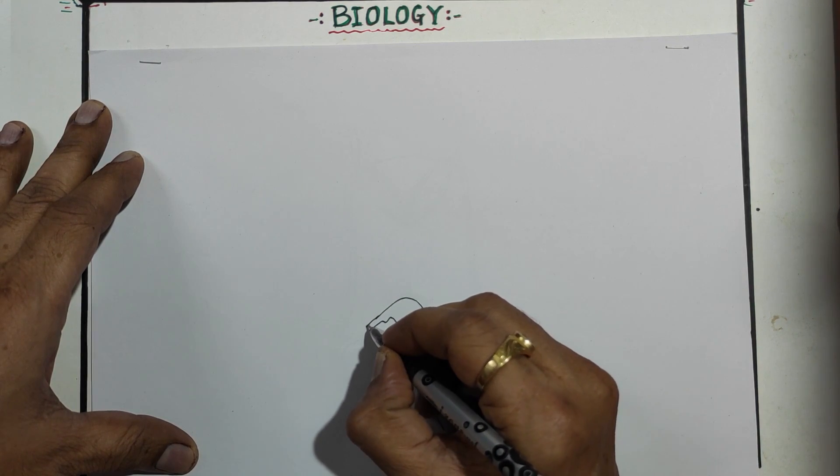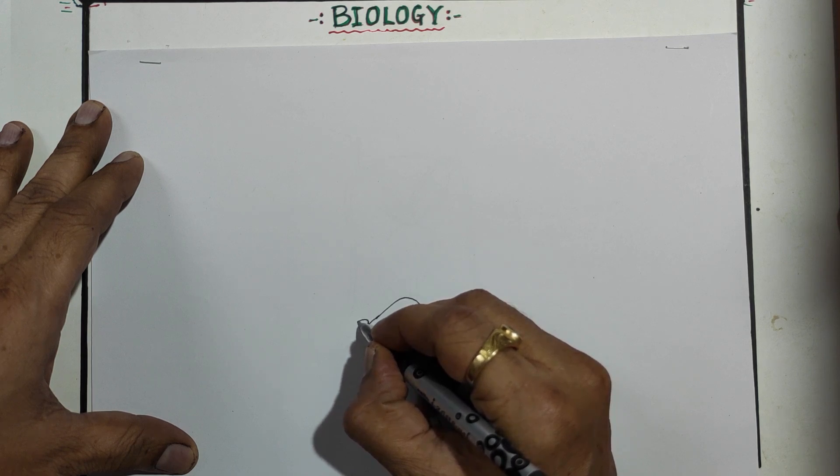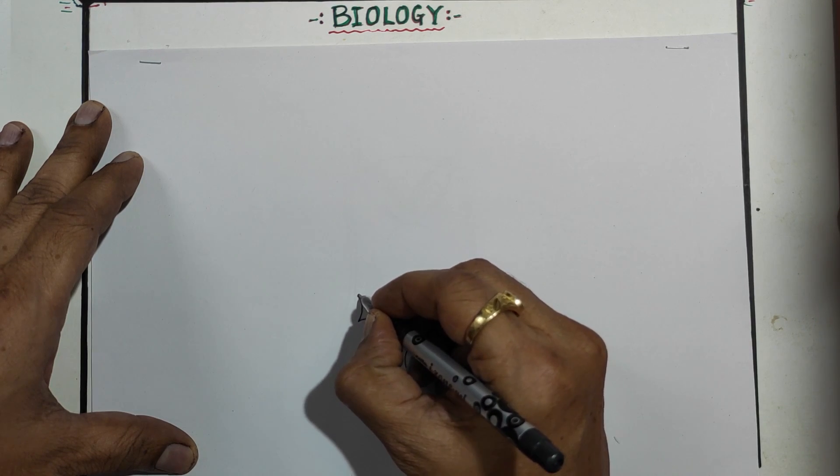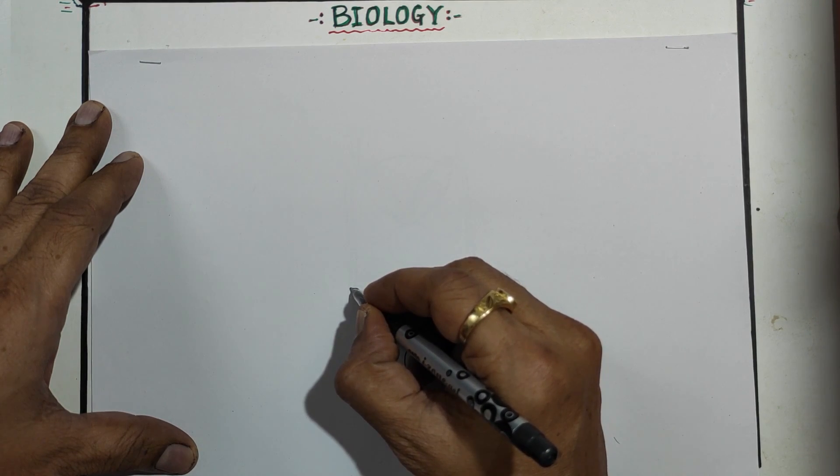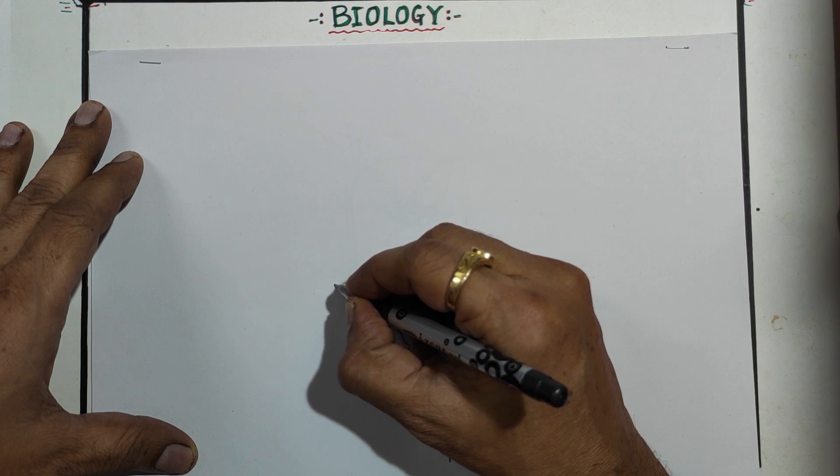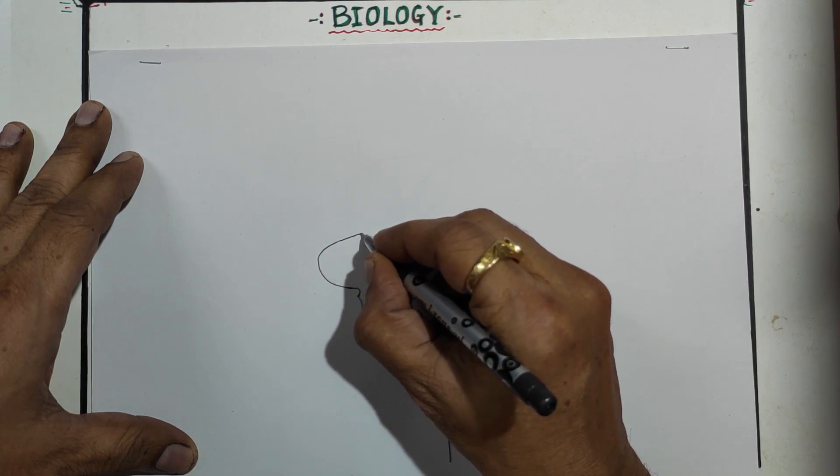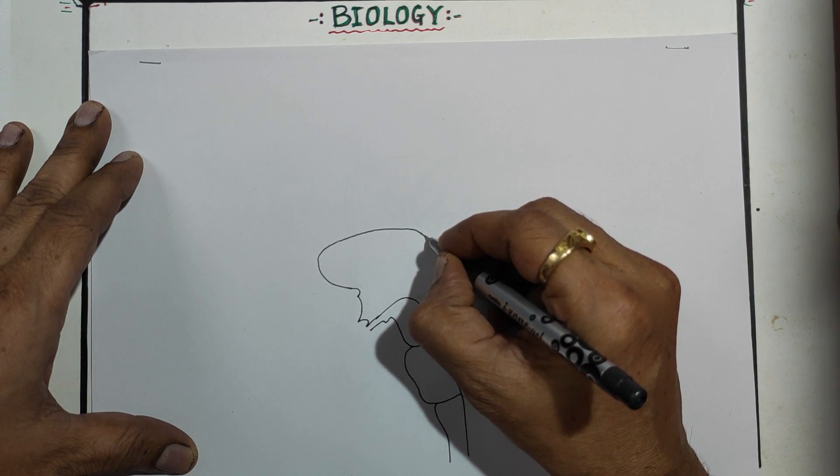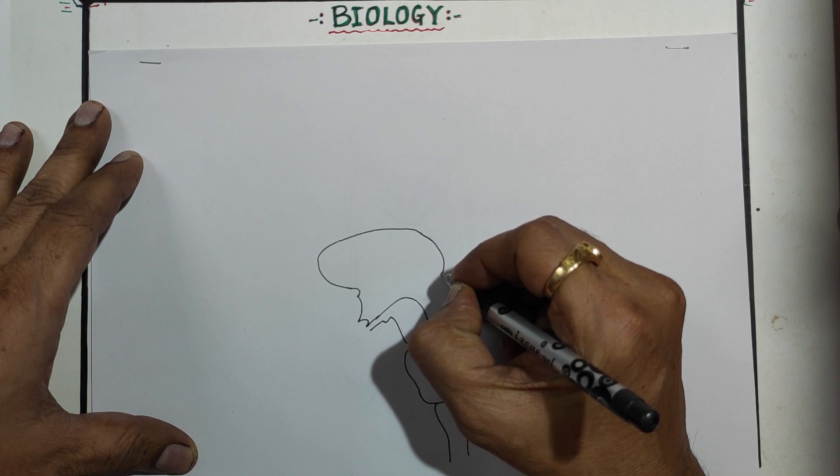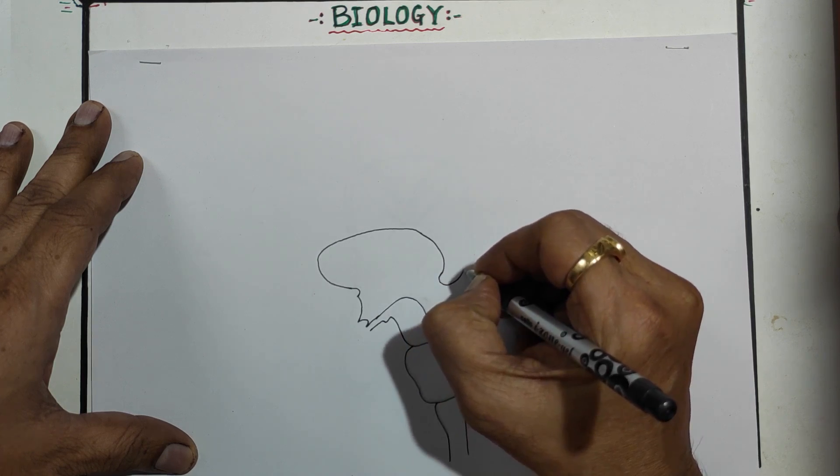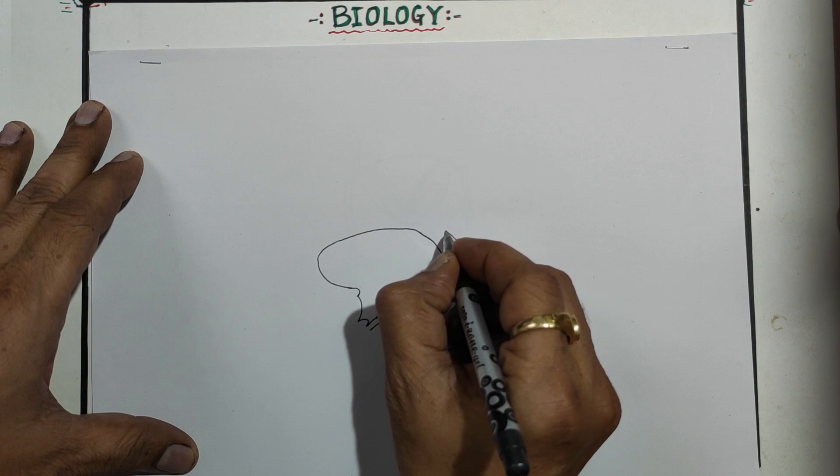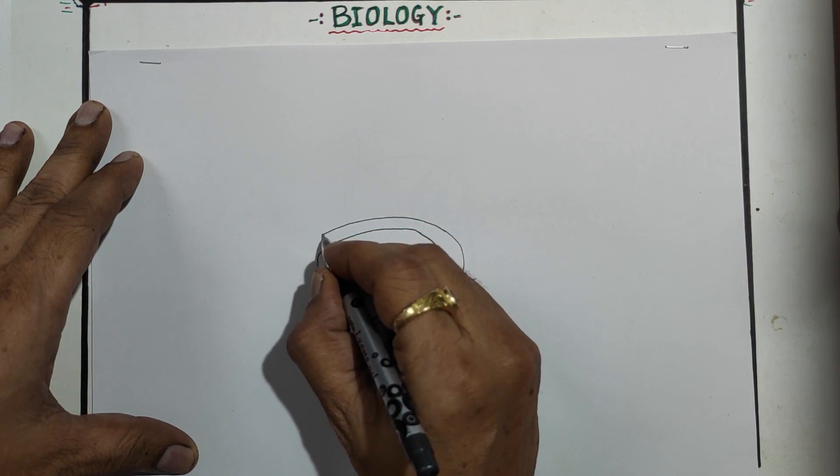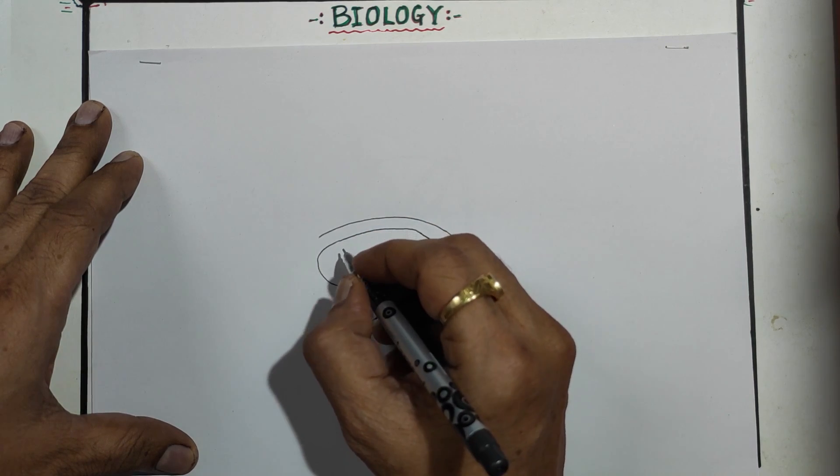Now this line will continue here. Make it like that, then like that. Bring it up. Make one curve here. Then this you have to continue like that. Bring it back. A little bit toward it. Little bit toward it, then take it back.